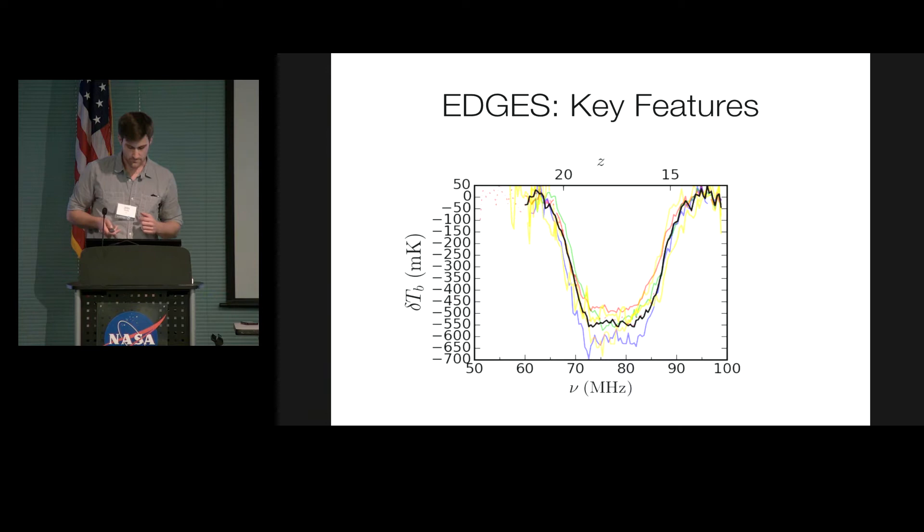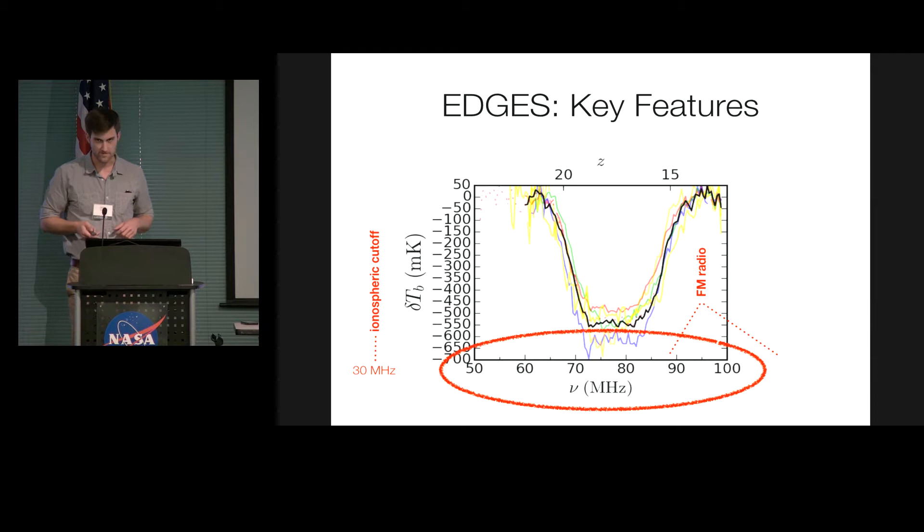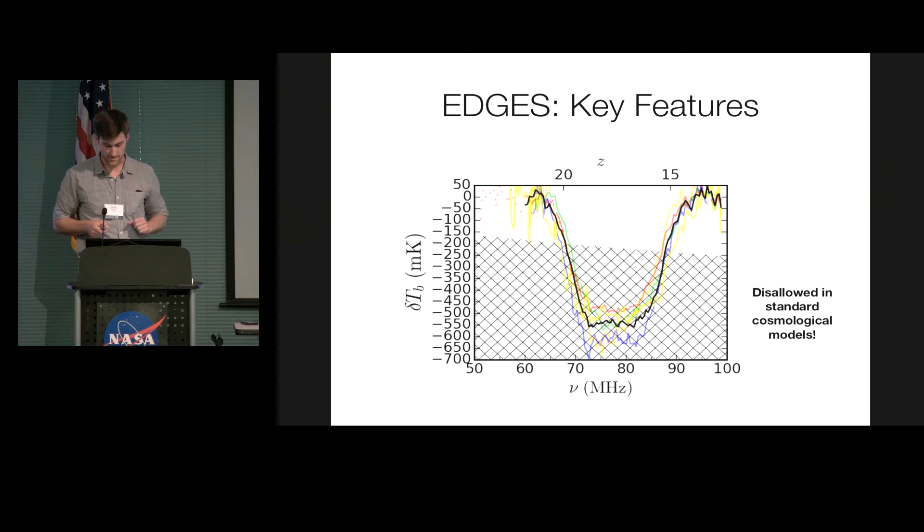So just to orient you here, I've re-plotted the edge's signal now with frequency on the x-axis instead of redshift. So this is the 50 to 100 megahertz range. And I'll just point out some things that may be familiar to you, like the FM radio band, which straddles the high-frequency edge of the edge's band, and the ionospheric cutoff, which is about 30 megahertz. Now the region I've just added cross-hatching to is the region that we thought it was impossible for there to be a signal in, in standard cosmological models. And that's basically because in the standard cosmology, we know what the coldest temperature the intergalactic medium can be is at any given redshift. It's just been cooling since recombination.